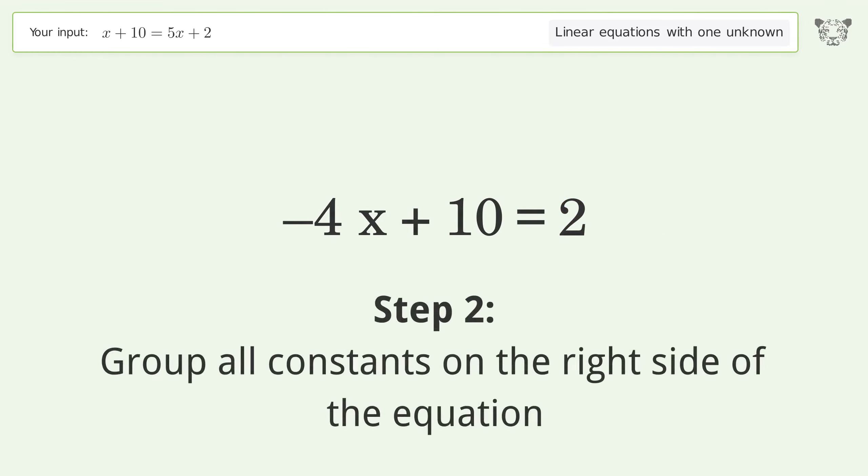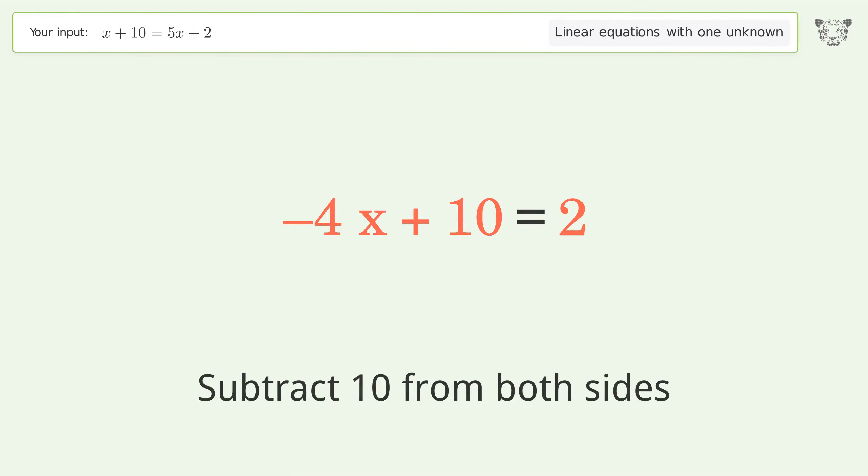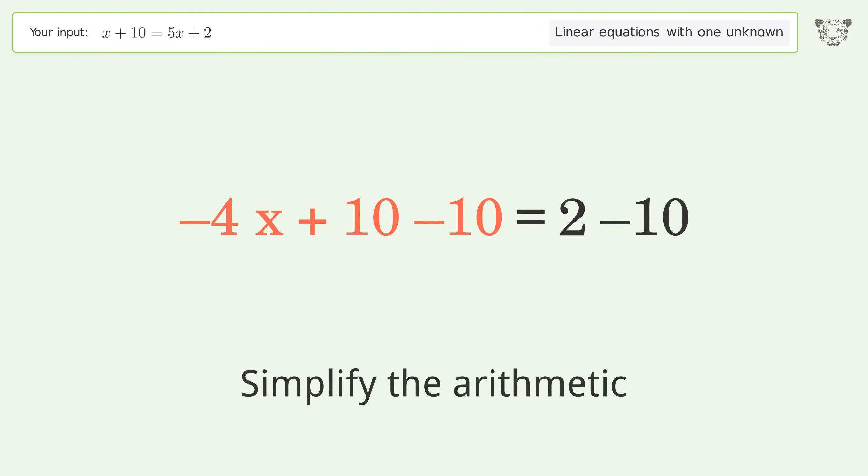Group all constants on the right side of the equation. Subtract 10 from both sides. Simplify the arithmetic.